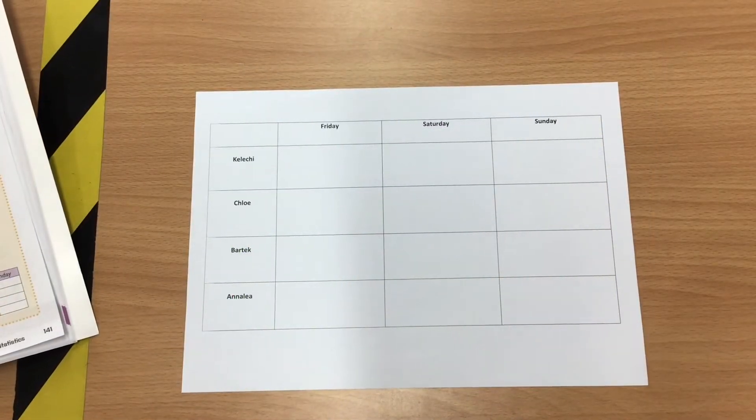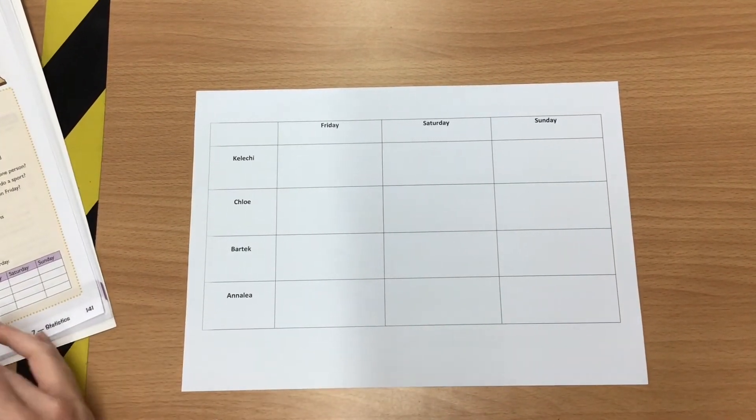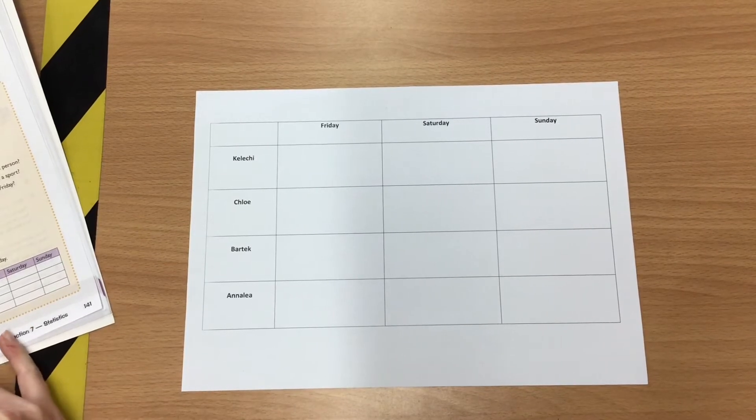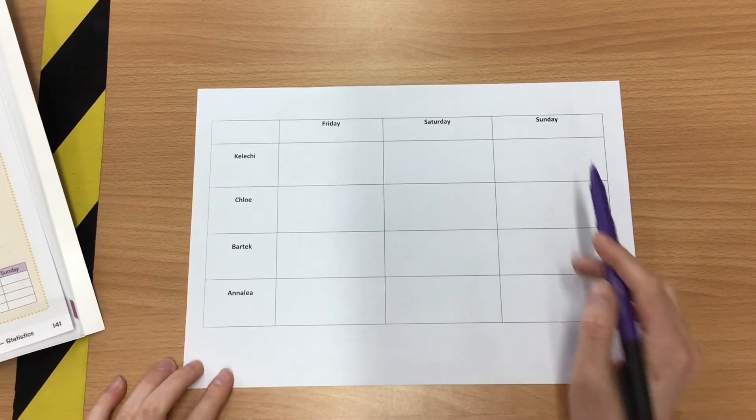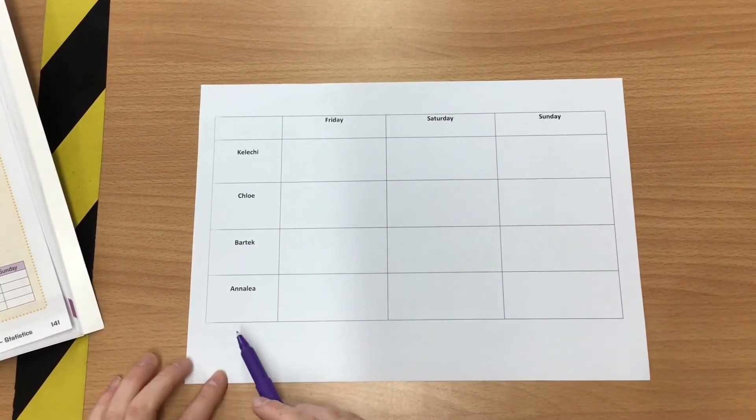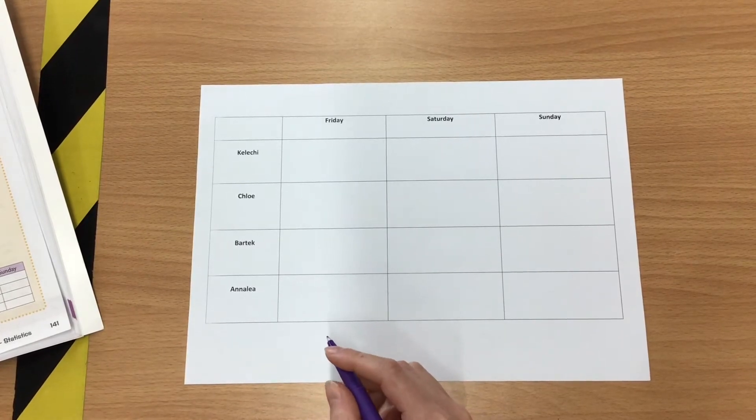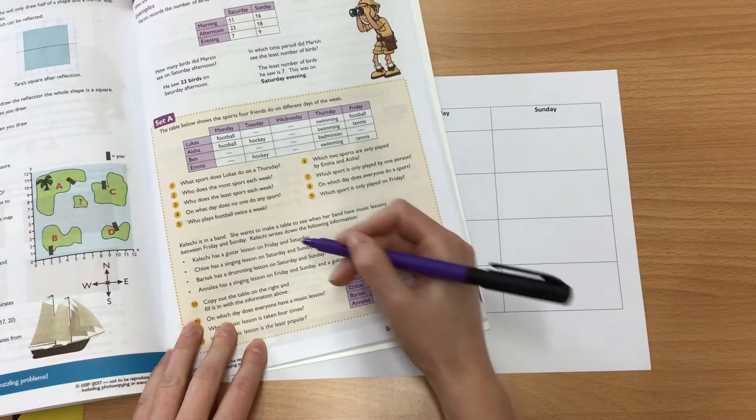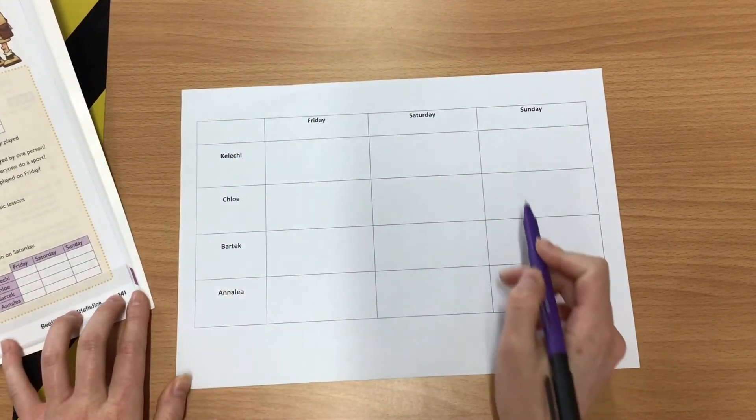So the last question I'm going to go over is question ten. It says, copy out the table on the right and fill it in with the information above. So I've already printed out my table, and you can do the same or you can draw yours out, it's up to you. So I'm going to look at the information that I have and I'm going to put it into my table.